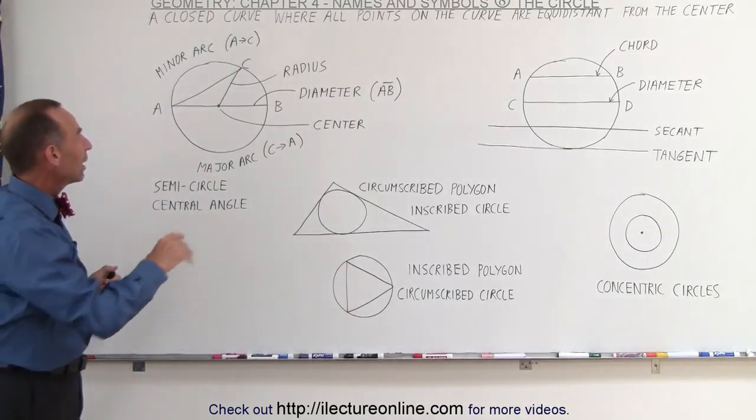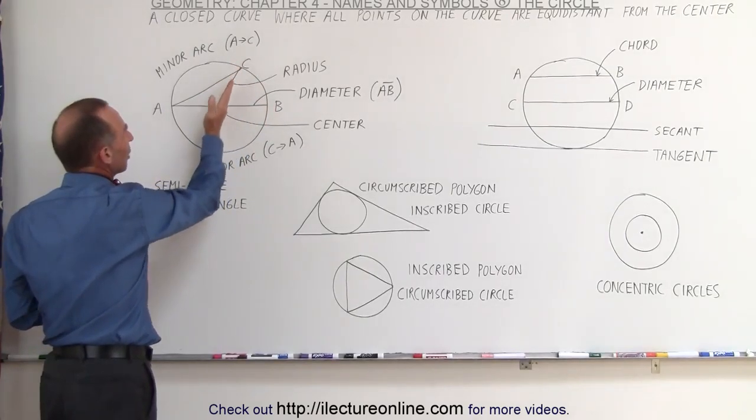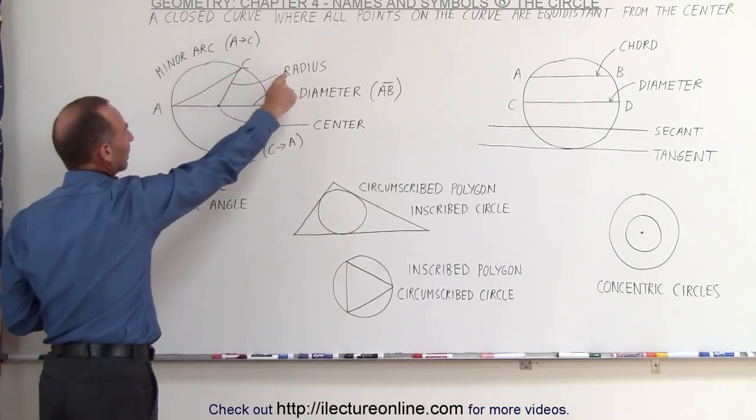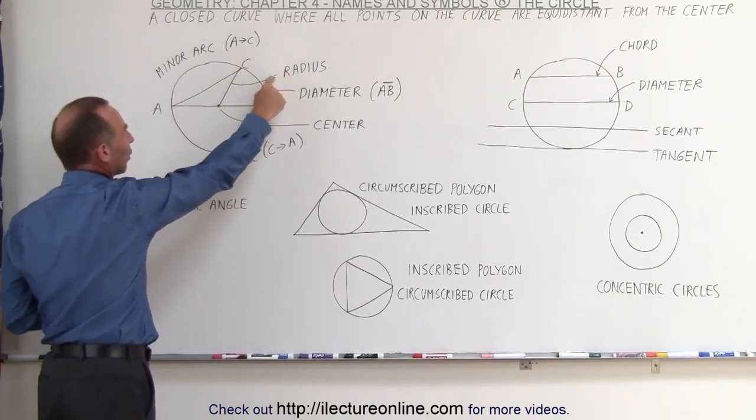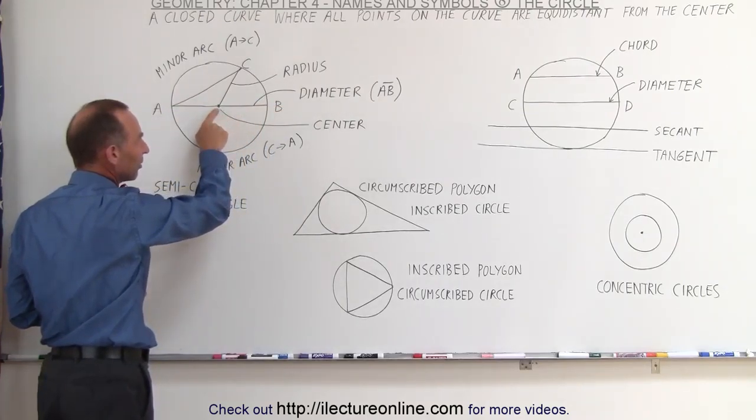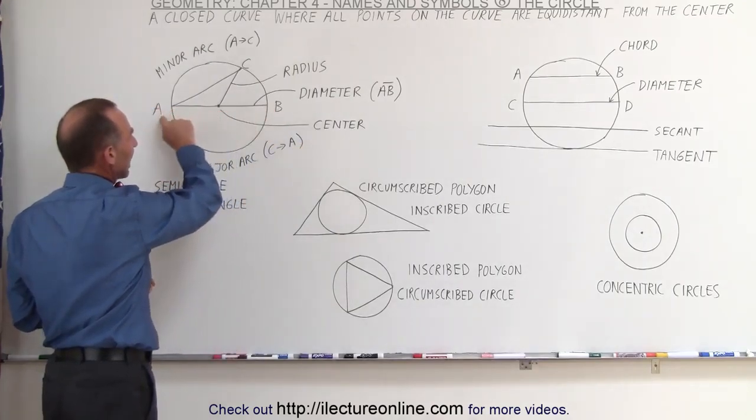Now notice we have a circle here. We have a line drawn from the center to the edge. When it reaches the edge perpendicular to the curve, we call that the radius of the circle. When we draw a line all the way through the circle, and it also goes to the center, that's called the diameter from A to B.